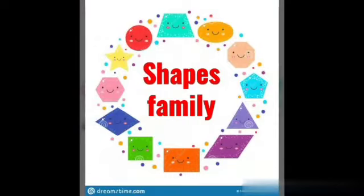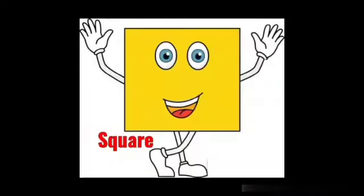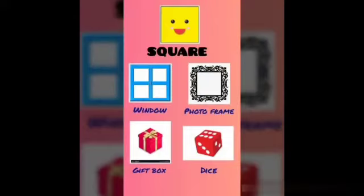Welcome to the shapes family. I am a square. I have four corners and four sides. All of my sides and corners are the same. Here are some of the members of the square family. A window, photo frame, dice and a gift box — all are square in shape.